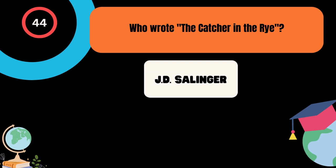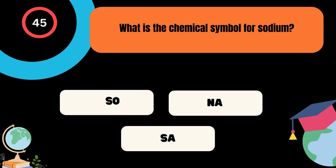What is the chemical symbol for sodium? A. So, B. Na, C. Sa. And the correct answer is Na.